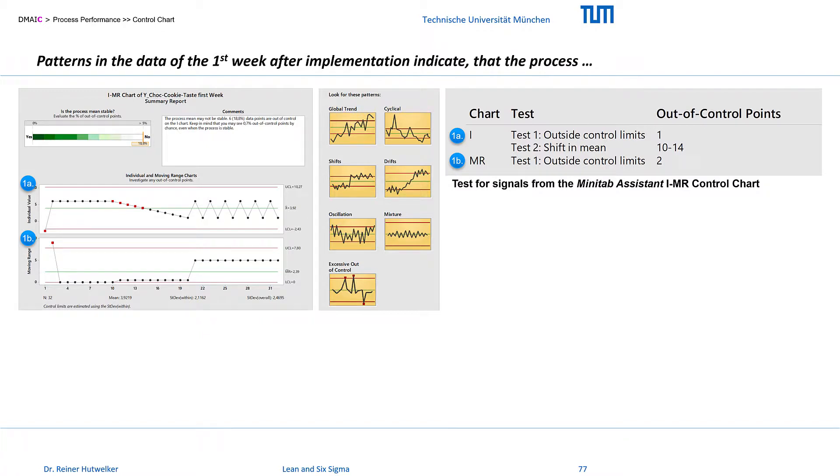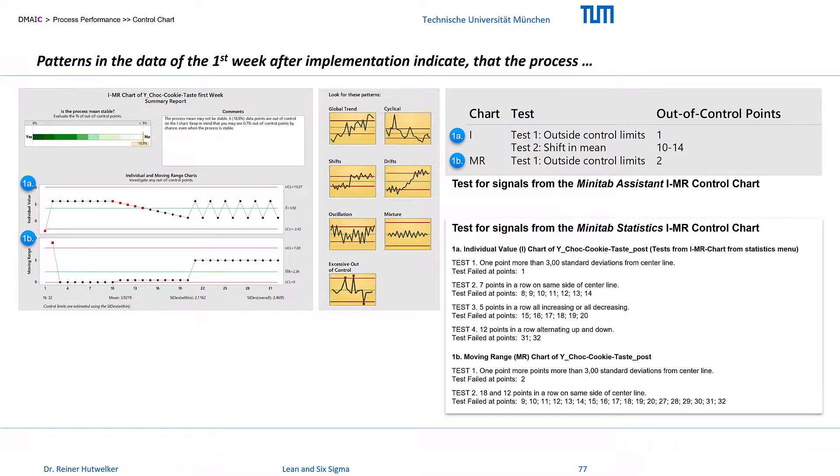In addition to graphically displaying the values and limits, specific tests of the control charts can identify extreme values and patterns in the data. Minitab offers two variants of the mentioned control charts, via the Assistant and via Statistics menu, which differ in the extent of these tests on signals.